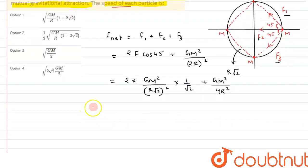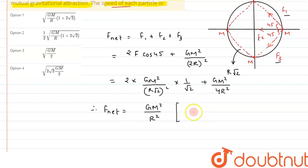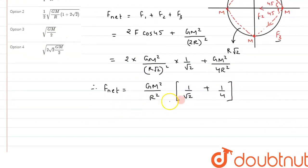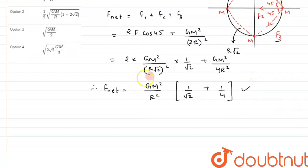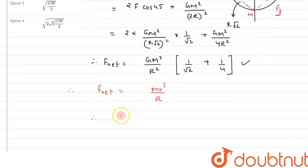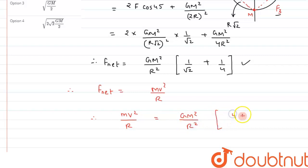Combining, the net force simplifies to GM²/r² taken as common, leaving us with (1/√2 + 1/4). This is the value of the net force acting on the particle. Since this particle is moving in a circle, there must be a centripetal force acting on it. This net force provides the necessary centripetal force for circular motion, so we write F_net = mv²/r.